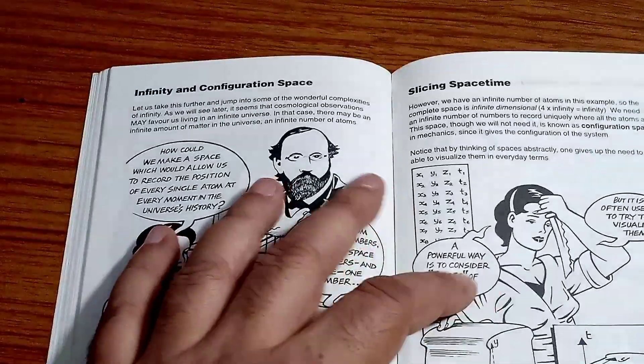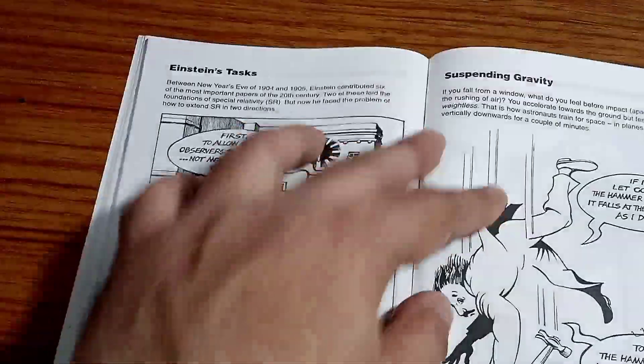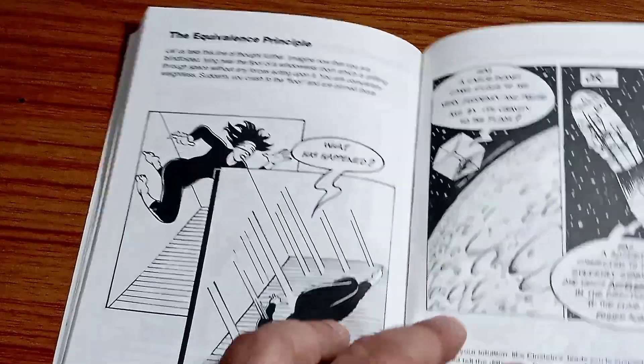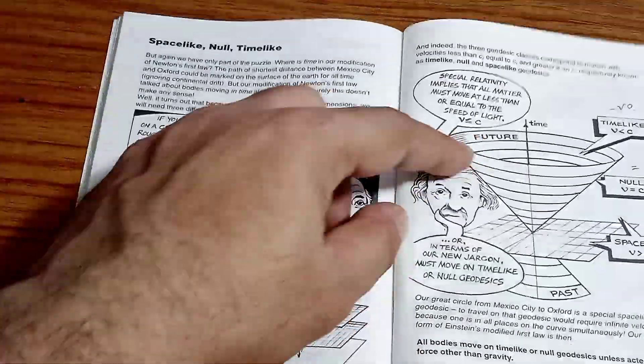So here you see that there's a slicing of space time being done over here. And then the suspending gravity, the Einstein thought experiment, and then the equivalence principle. Then it further goes into extending Newton's plus law.